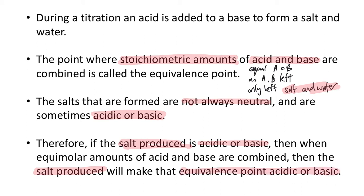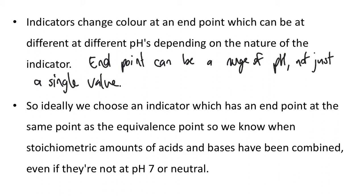What you need to recognize is that the equivalence point, when you have equal amounts of acid and base, doesn't necessarily have to be neutral — it's not necessarily at pH 7 at 25°C. So we need different indicators depending on what titration we do. Indicators change color at the end point. The end point can be a range of pHs, not just a single value — like from 6.7 to 7.2.